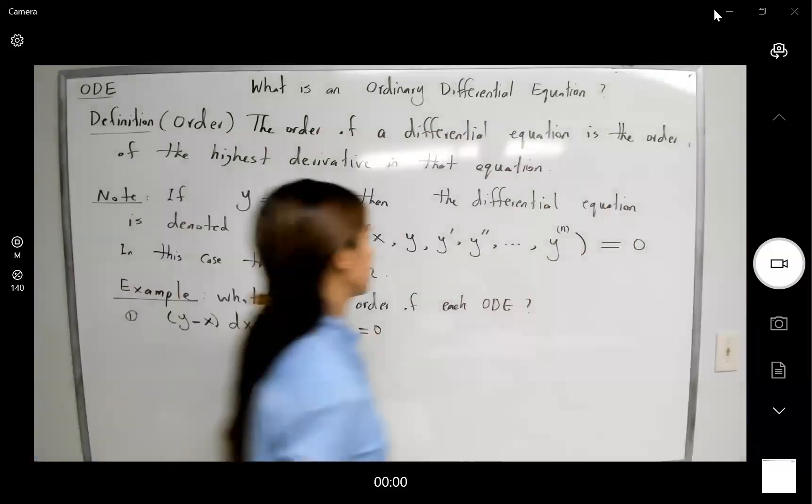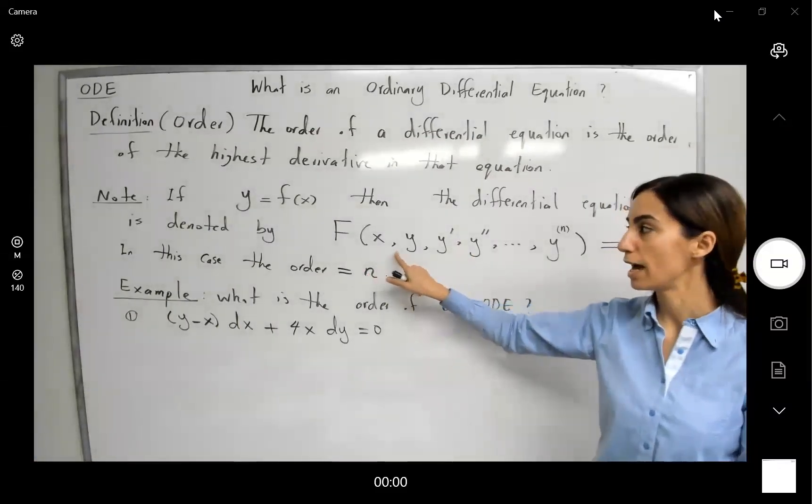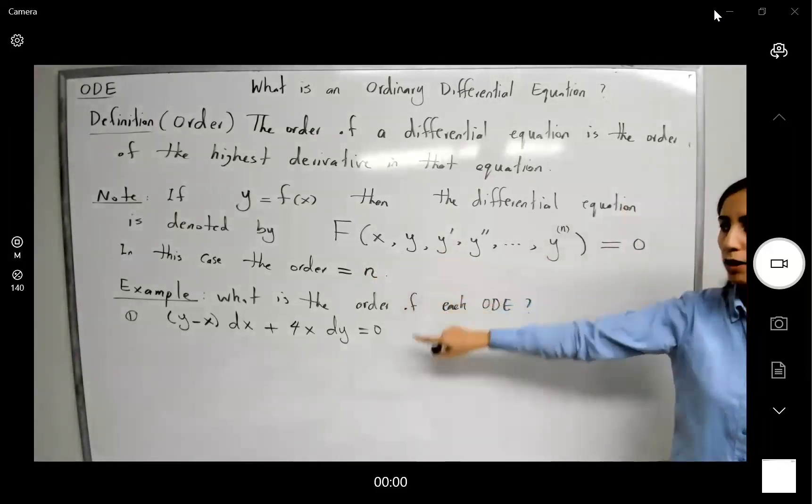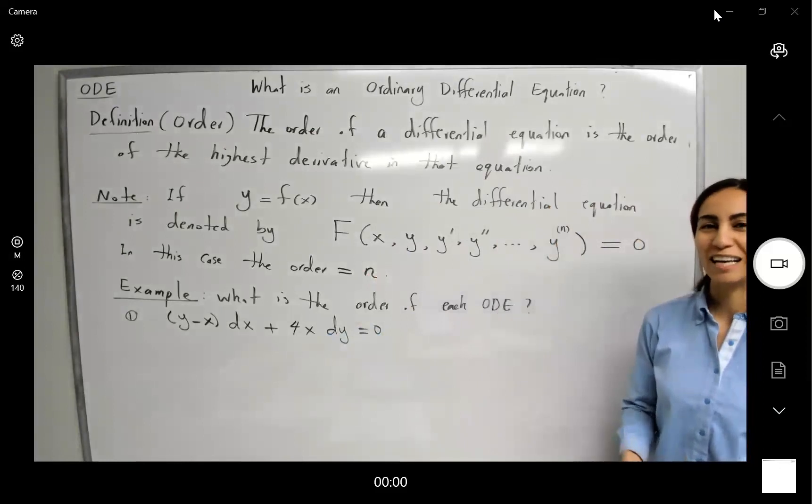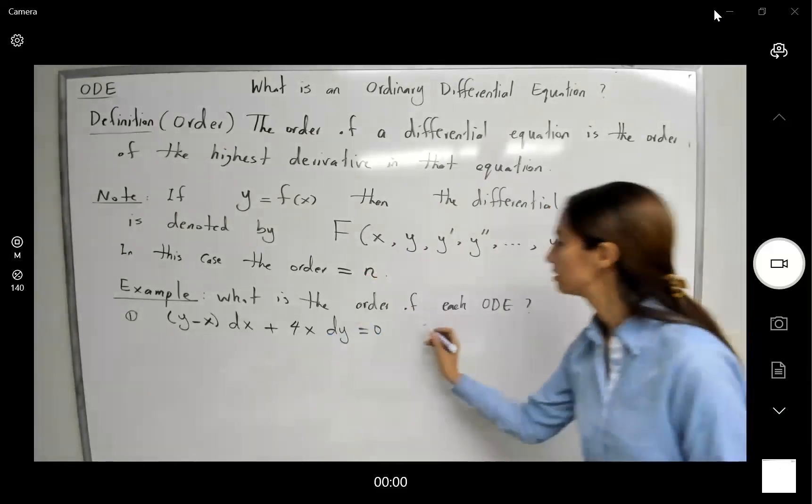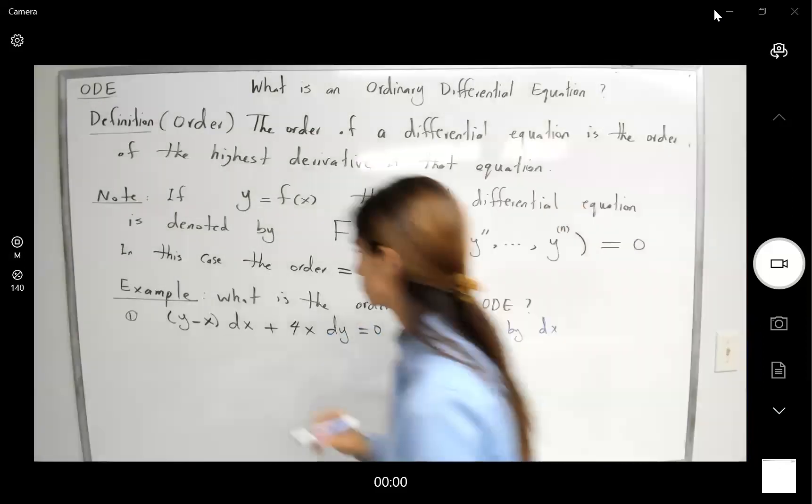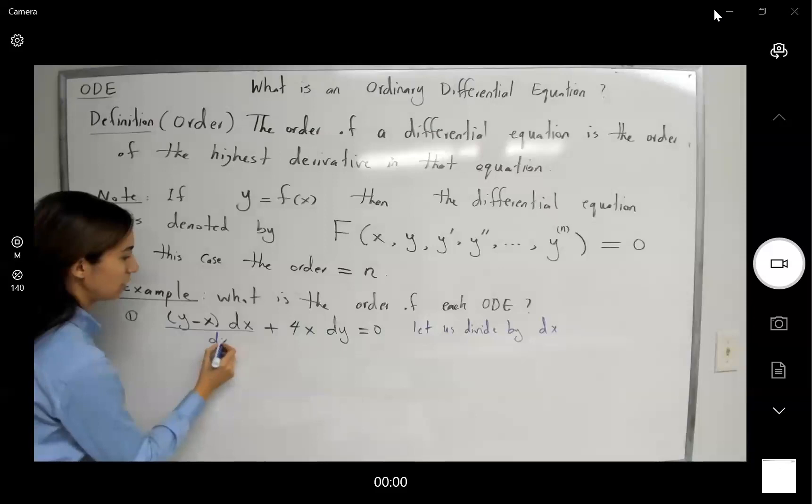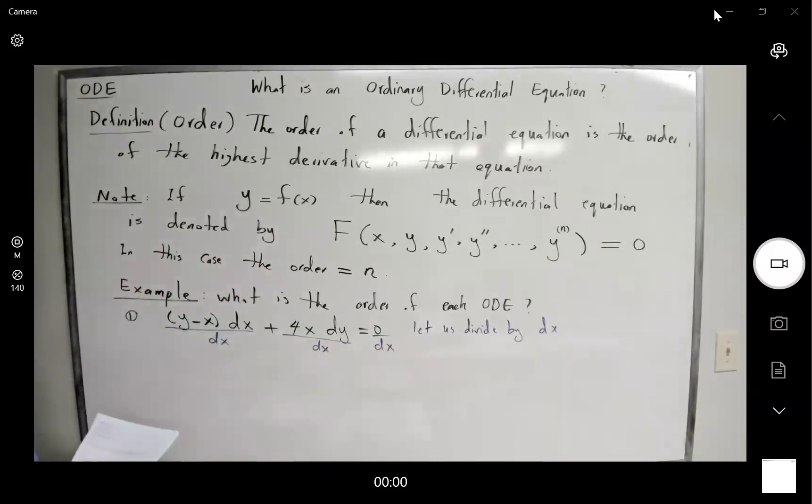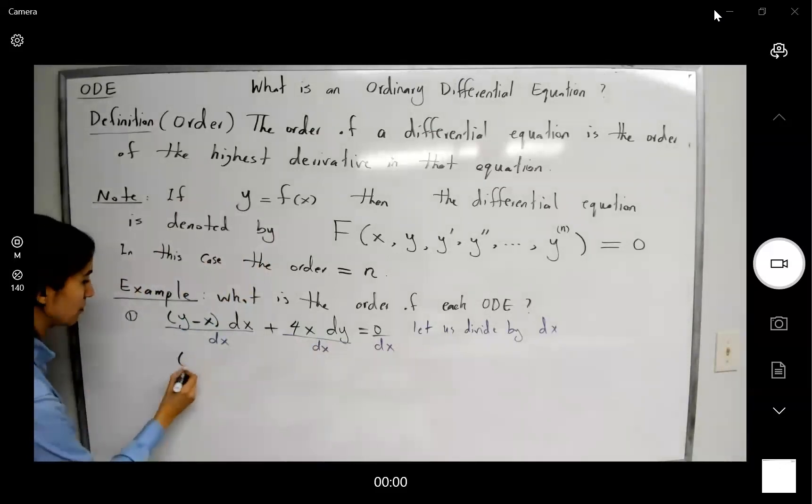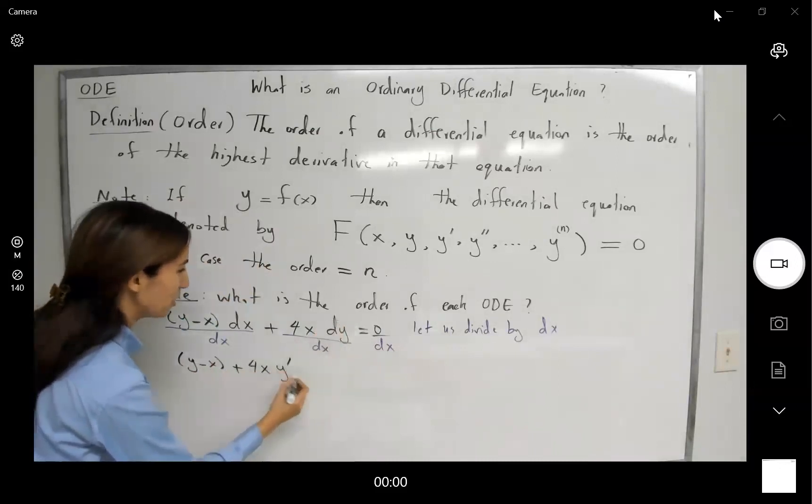You might be interested in writing this differential equation so you can see independent variable x and the derivatives of y. So what you can do is divide all terms by dx so you can have y prime in this equation. So let us divide by dx. Our goal is to create y prime. So as you can see, you end up with y minus x plus 4x dy over dx, which is y prime, equal to 0.